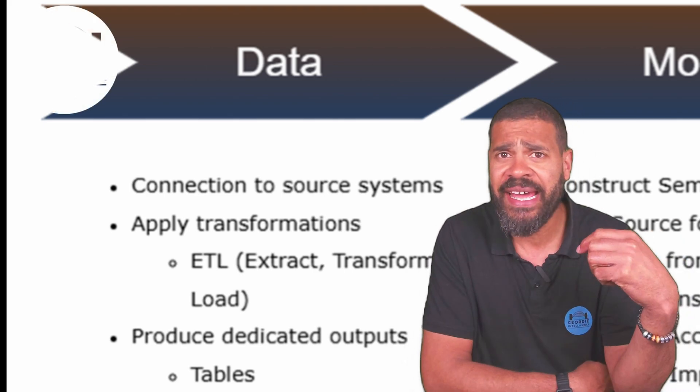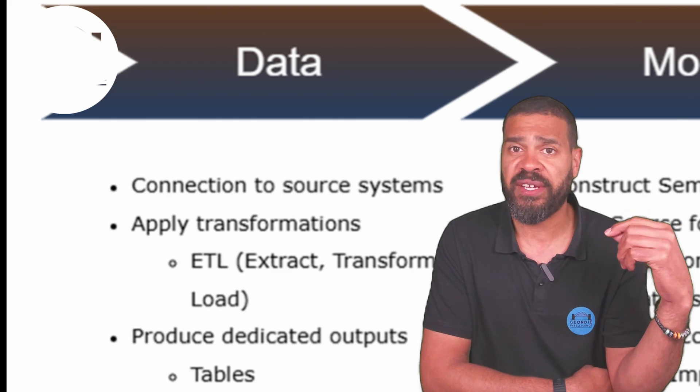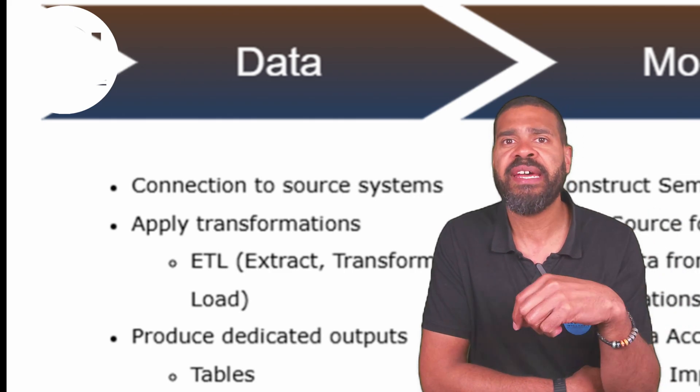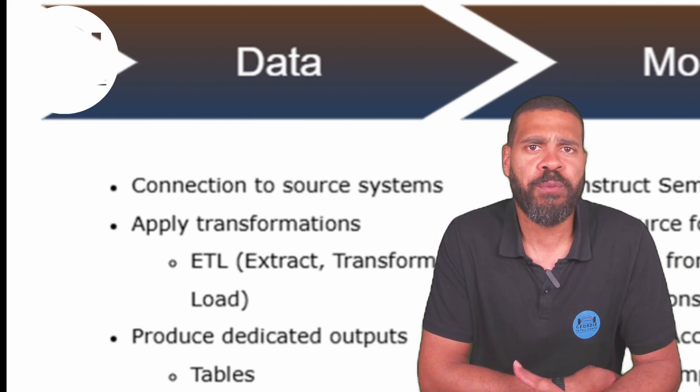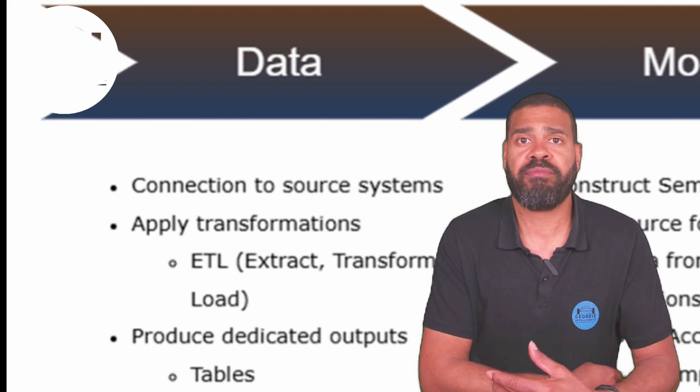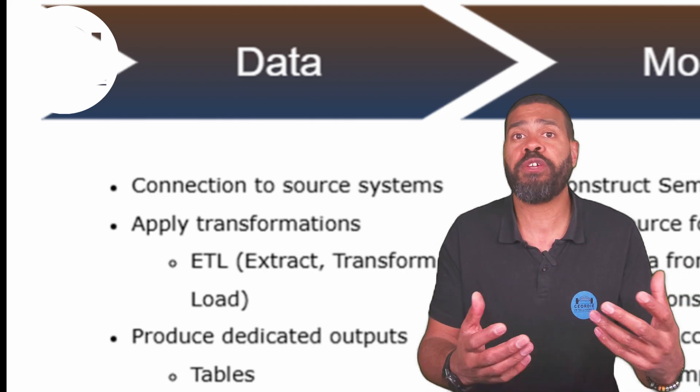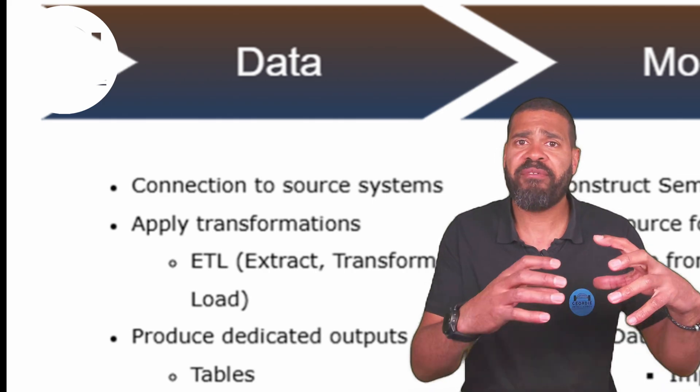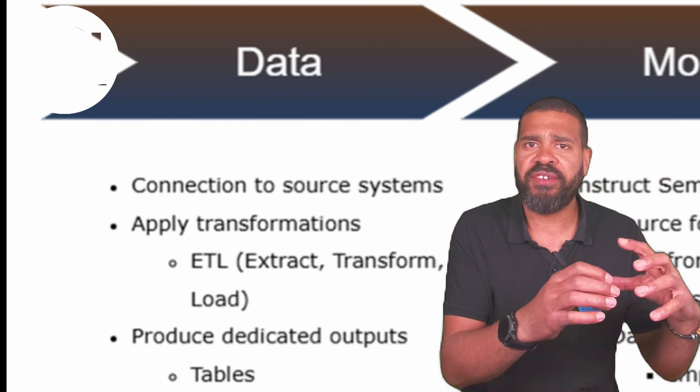You can then have that produce tables, and those tables can be consumed using view access rights. So you have a permissions bubble: these people can edit it, these people can view it. That way, hopefully, you're not going to get to a point where someone makes a change that breaks a report downstream elsewhere.